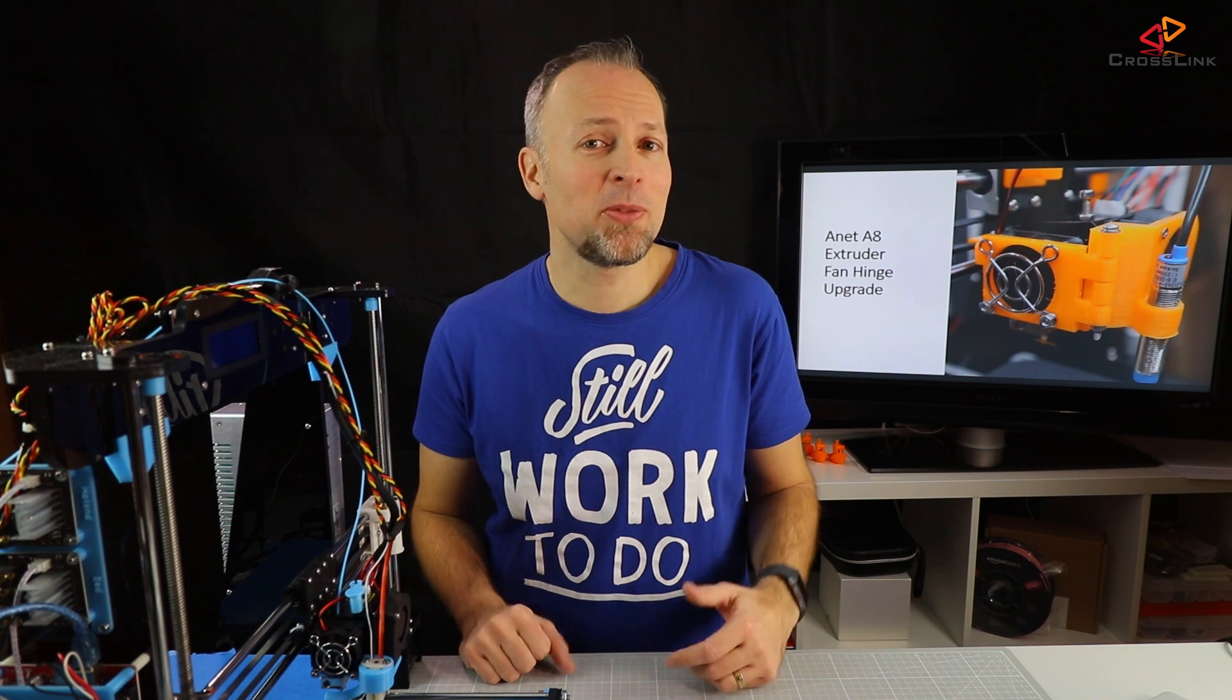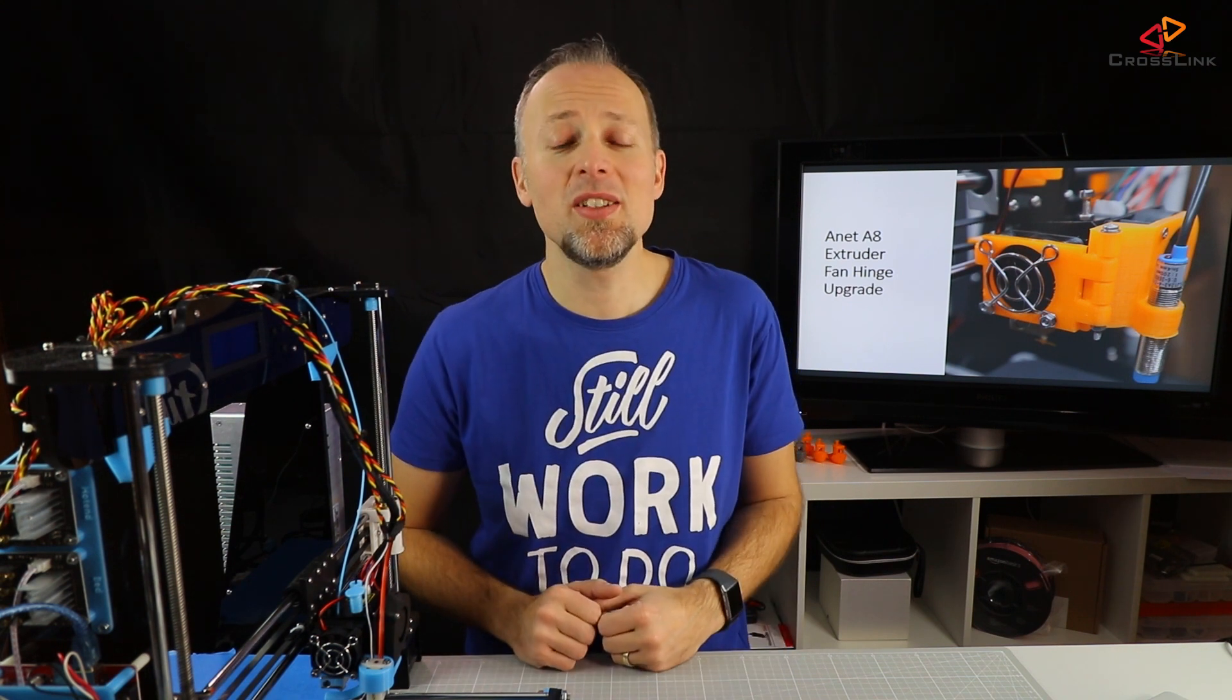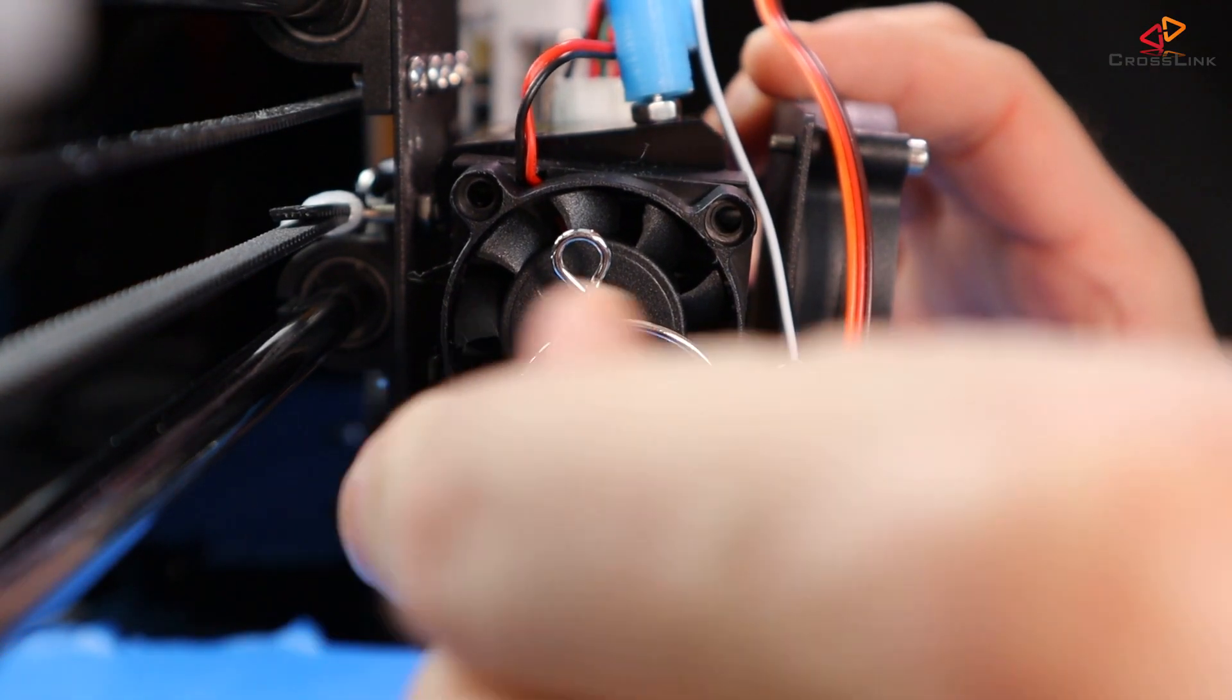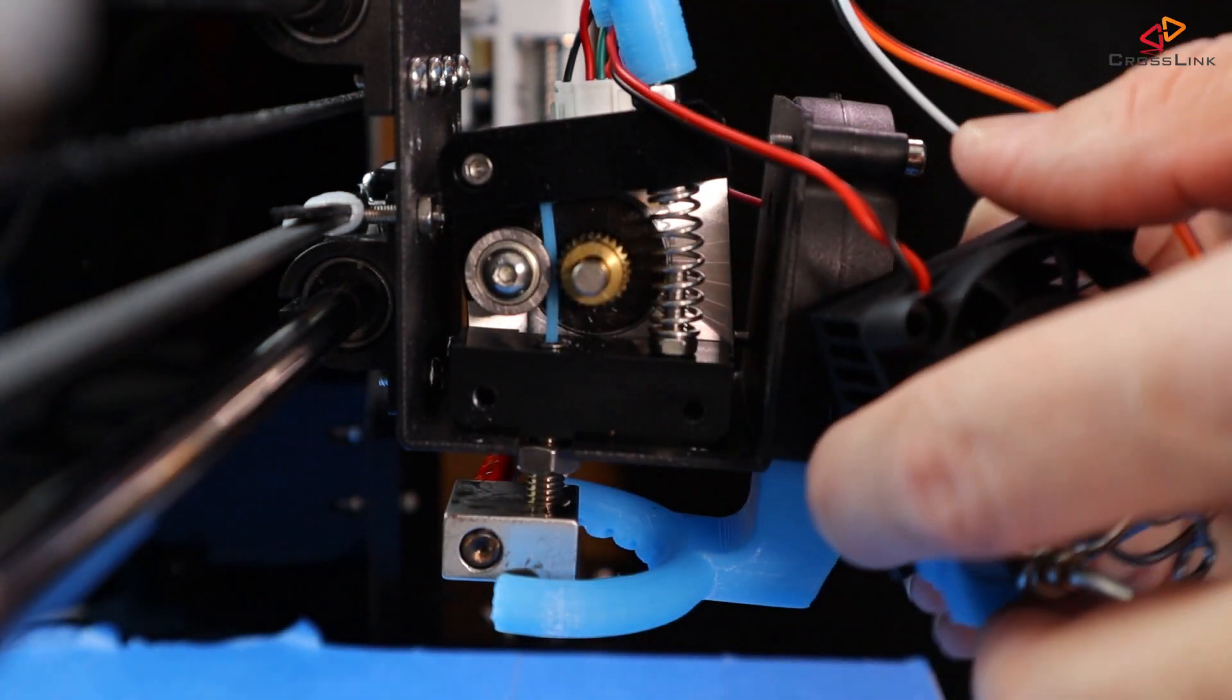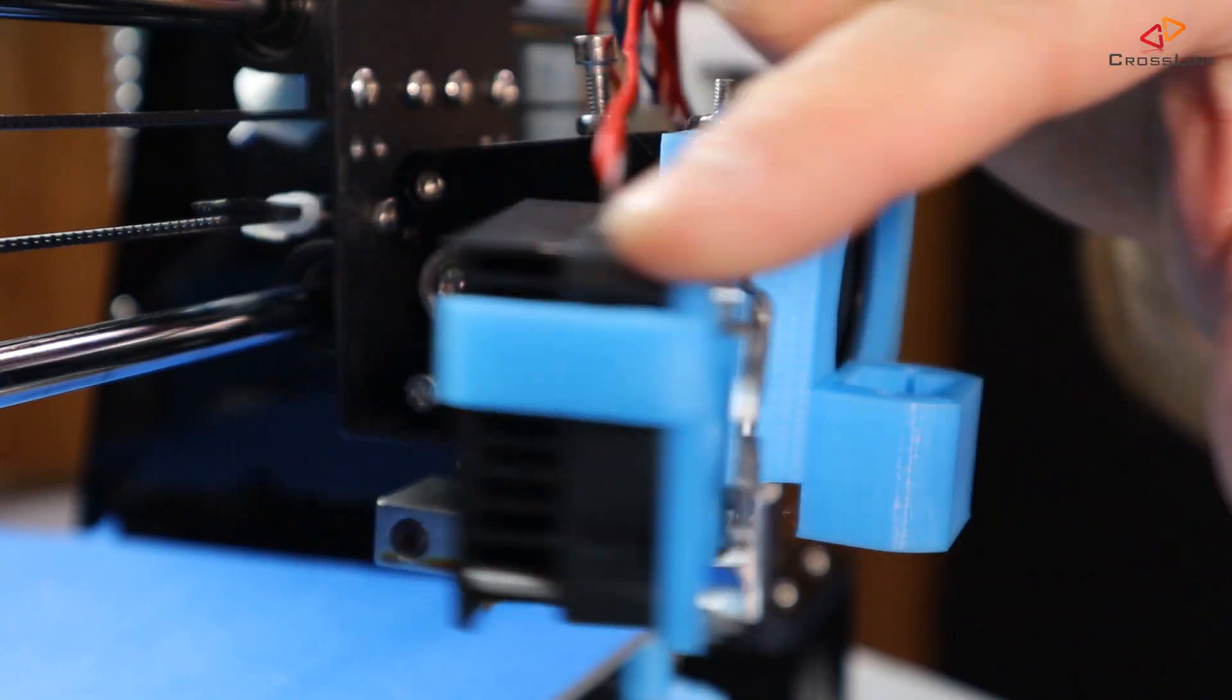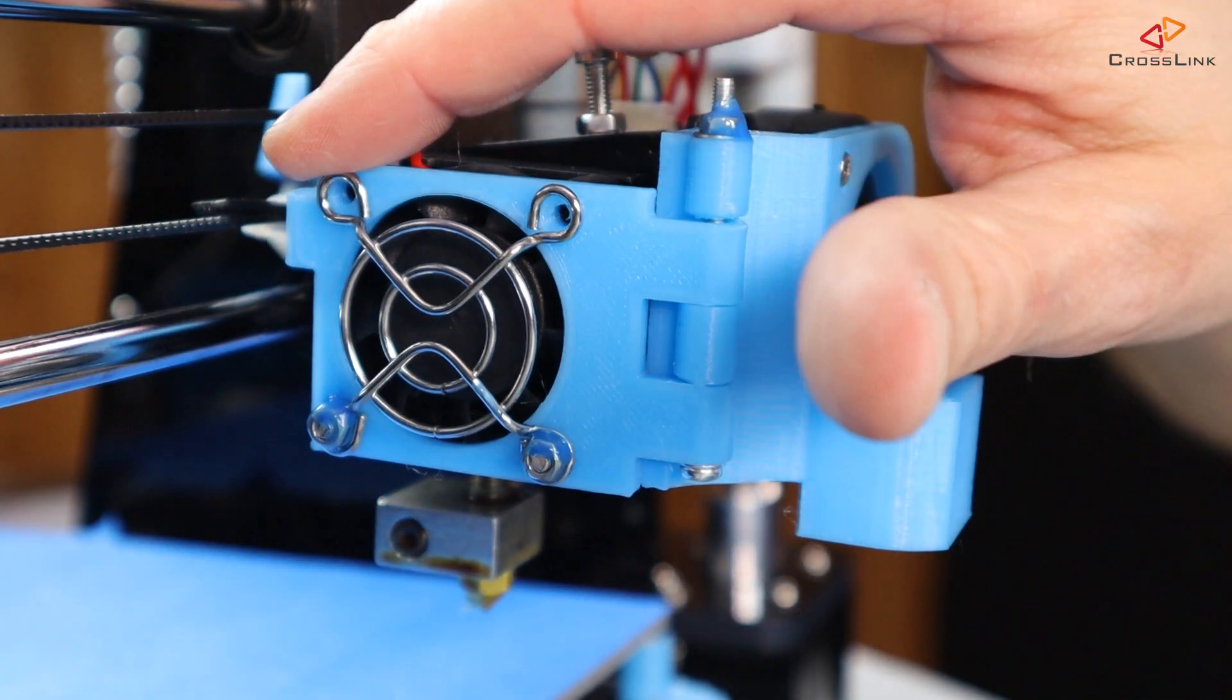Changing filament can sometimes be a challenge, especially when filament gets stuck in the extruder or the extruder is blocking for another reason. If you have to access the extruder's inner part, you have to remove the filament cooler fan and the cooling block, but this can be done much easier with the extruder fan hinge upgrade.